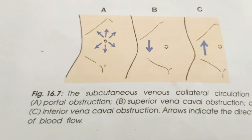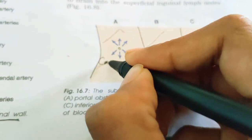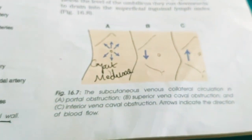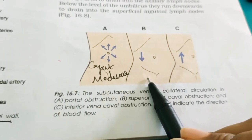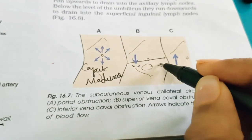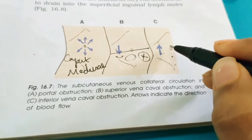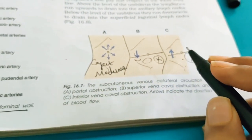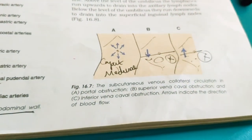The subcutaneous venous collateral in portal obstruction forms caput medusae — a flower-like structure seen in portal hypertension. In superior vena cava obstruction, the thoracoepigastric vein opens up and blood flows downward, crossing the umbilical watershed area. In inferior vena cava obstruction, blood goes above the watershed line. In all three — portal hypertension, SVC obstruction, and IVC obstruction — the watershed line is not applicable.